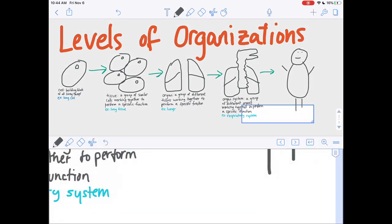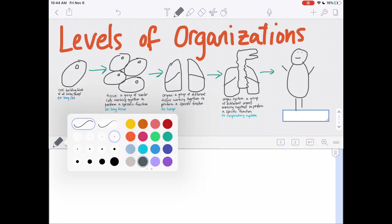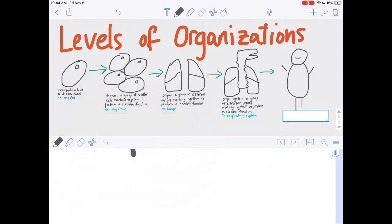And let's write our definition of organism over here. So an organism is a group of organ systems working together.